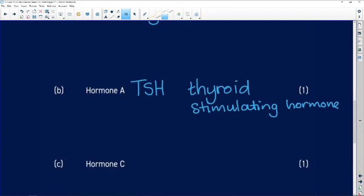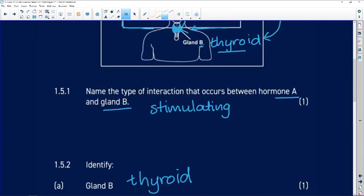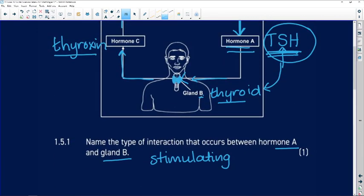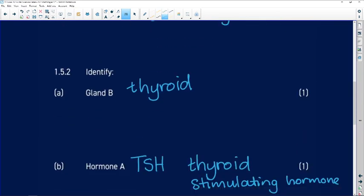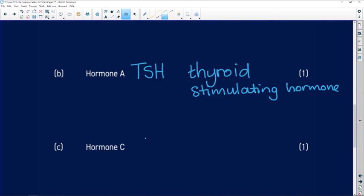And our next thing that we have to identify is hormone C. This is the hormone produced by the thyroid gland, which is thyroxine. And so we write in thyroxine. And remember, you're trying to spell them as accurately as possible.